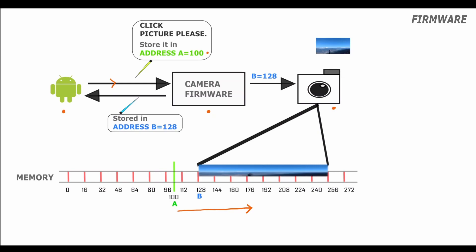The camera firmware knows much more about the hardware than the camera application. It knows that the hardware wants to store images starting from memory addresses which are multiples of a number X. Based on the architecture, this could be an optional requirement for optimal performance in hardware-memory interaction, or it could be a compulsory requirement of the hardware.